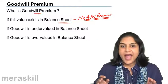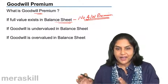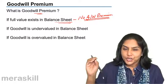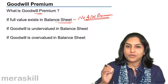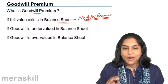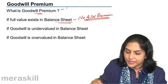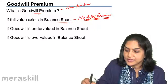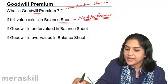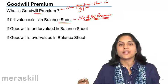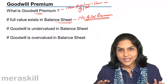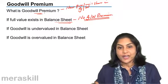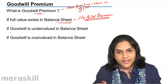If there is goodwill in the firm and if this goodwill is not there in the balance sheet, then the new partner should bring in an amount of goodwill premium, which is nothing but an amount equal to his share — the new partner's share in goodwill. This is the amount of his share in the goodwill which is valued, to the extent that it is not there in the balance sheet.